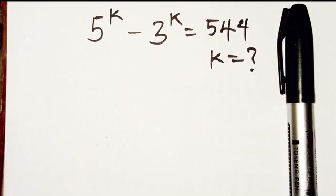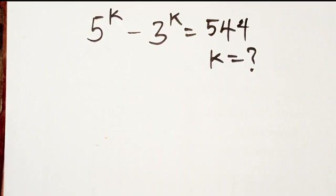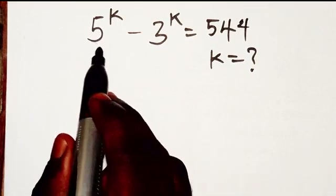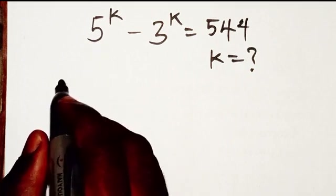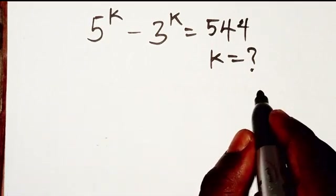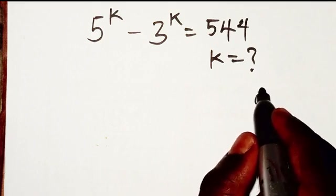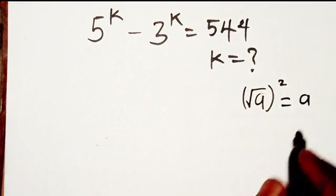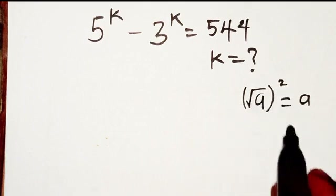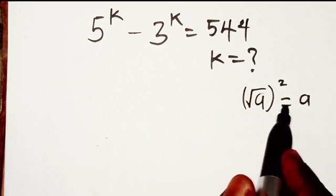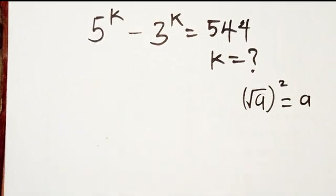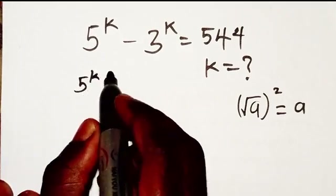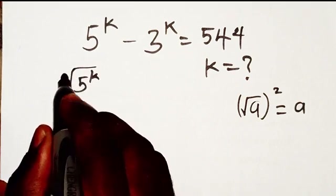So now, what are we going to do? We are going to be manipulating this. If I have 'a' and I write root a, then (√a)² gives me 'a' because the square cancels the square root. I'm going to apply that here — I can write 5^k as (√(5^k))² and similarly for 3^k.